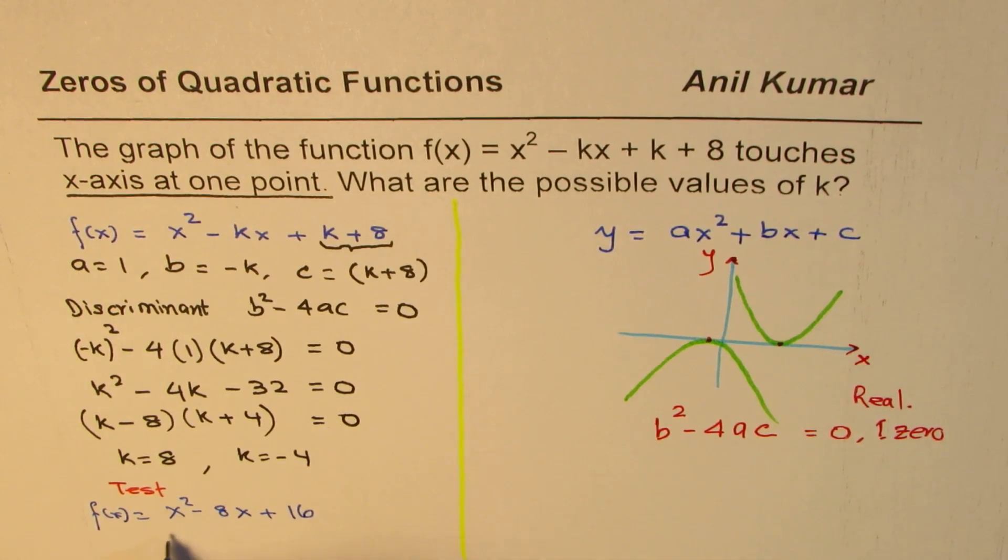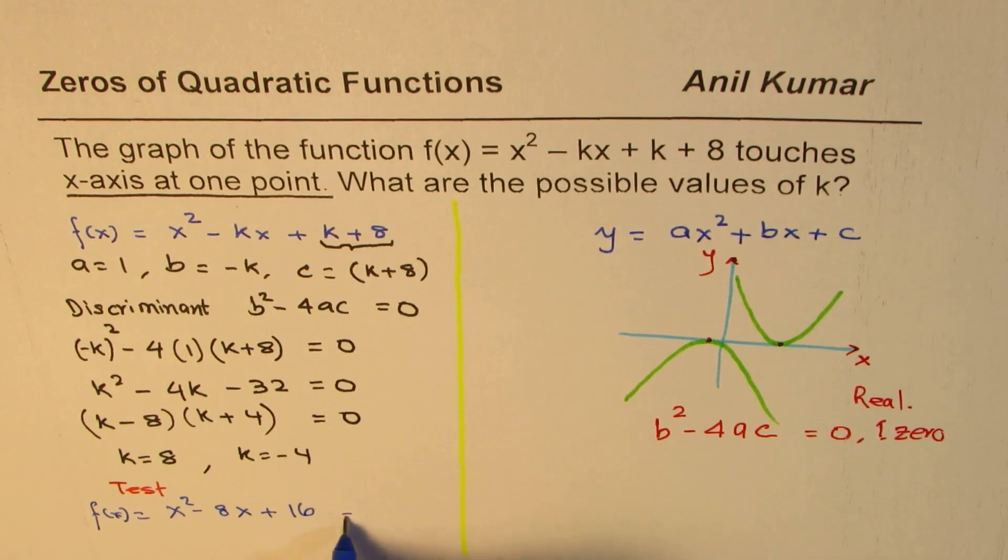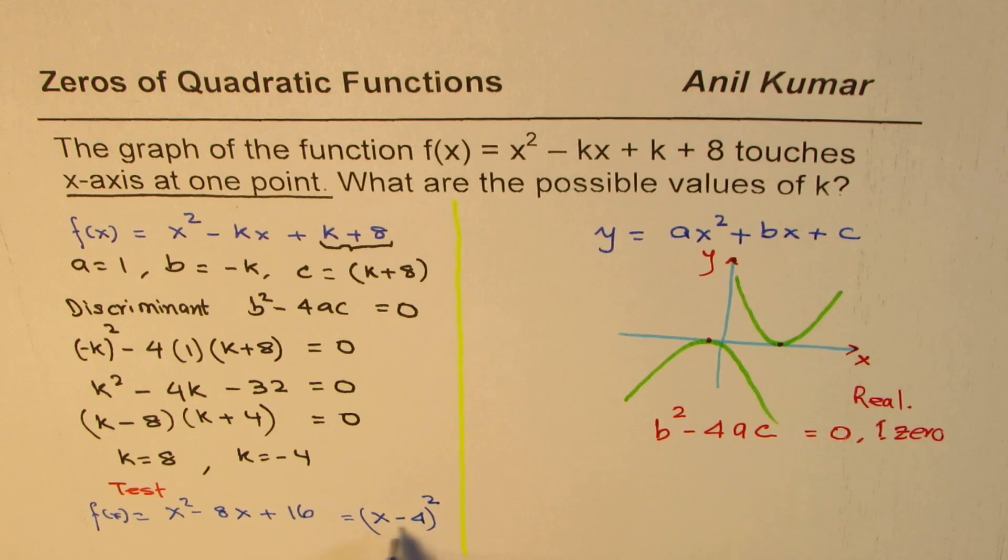Now you can see this is indeed a perfect square. You could write this as x minus 4 whole square. And that graph touches the x-axis only at one point, and that point is x equals to 4.